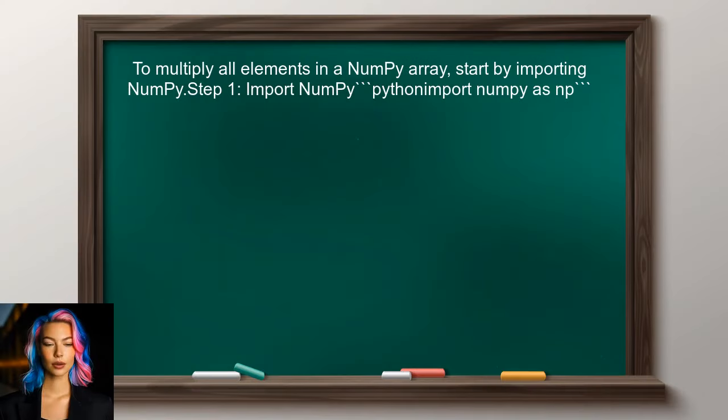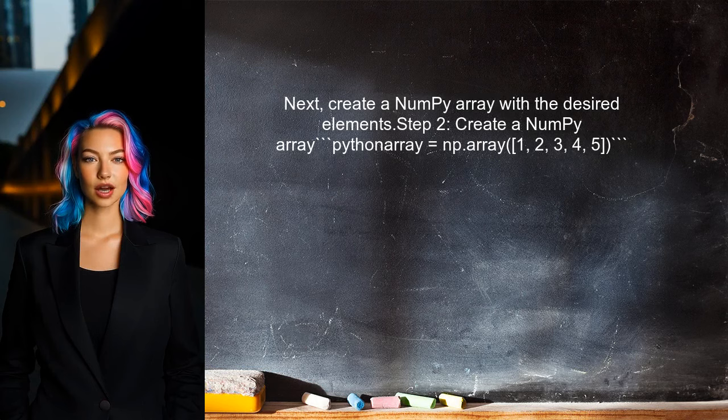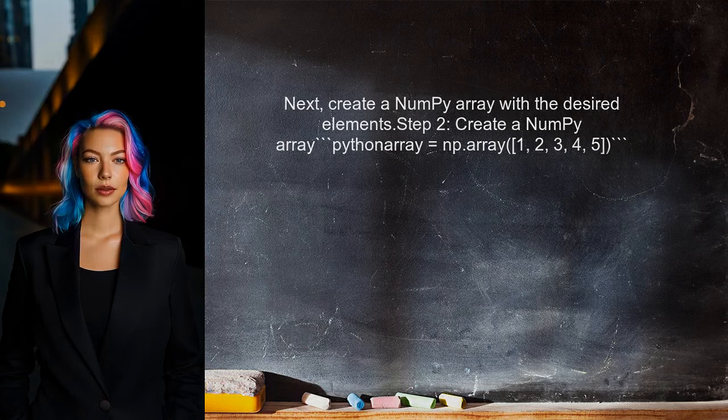To multiply all elements in a NumPy array, the user can utilize the NumPy library's built-in functions. First, they need to import NumPy into their Python script. Next, the user should create a NumPy array with the desired elements. For example, they can create an array with the numbers 1 through 5.